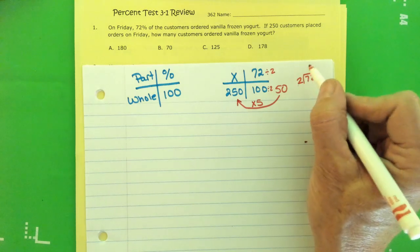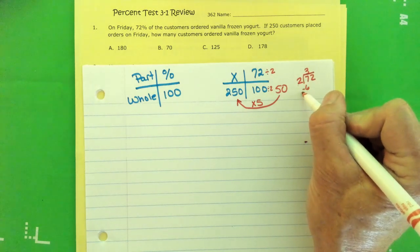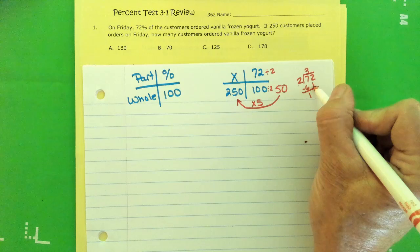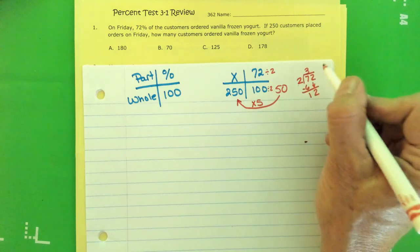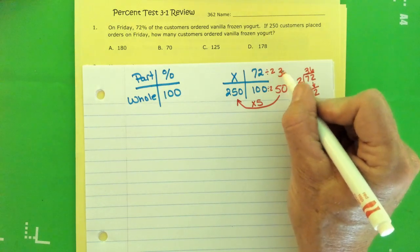Now 50 is a friendlier number to get to 250. 50, 100, 150, 200, 250. That would be five times bigger. So what I did to the 100, I divided by two and I got 50. I'm going to have to take 72 divided by two. Two fits into seven three times, three times two is six, I got one left. Bring down the two, two fits into 12 six times. So my top number becomes 36.